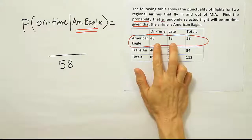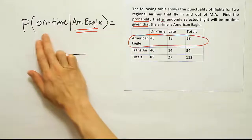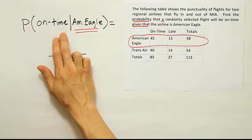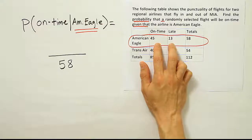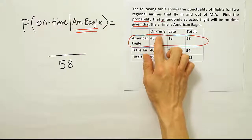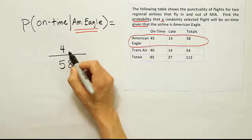And that should correspond to this condition here, the on time condition. So looking at the remaining two numbers that we haven't used yet, which one corresponds to the flight being on time? Clearly, the answer is 45, right? So 45 is the answer for the top.